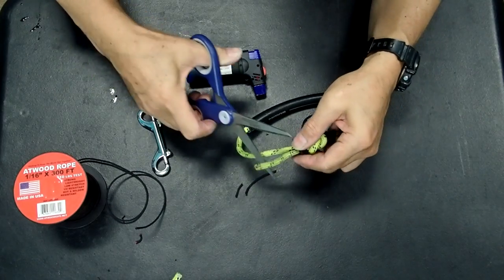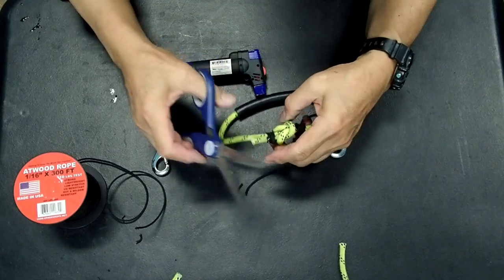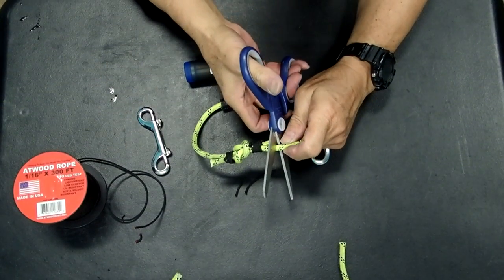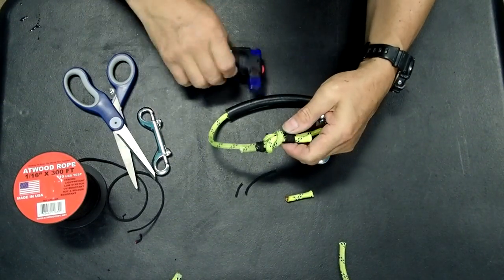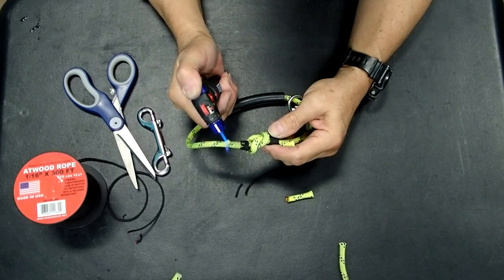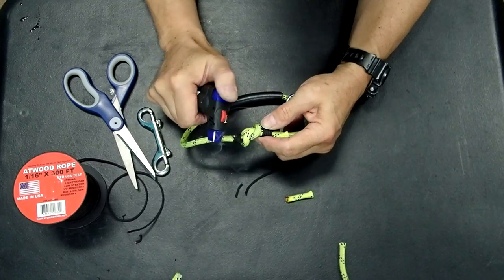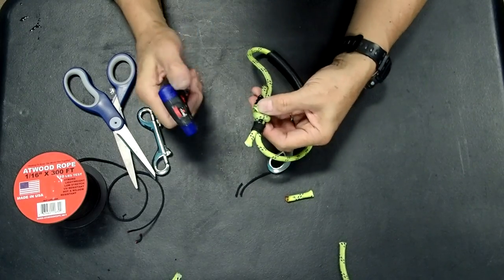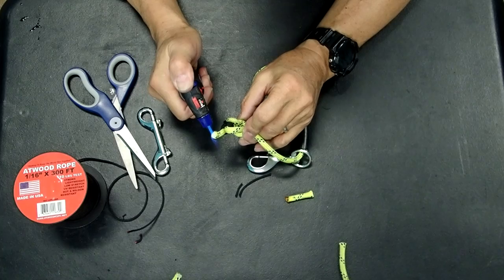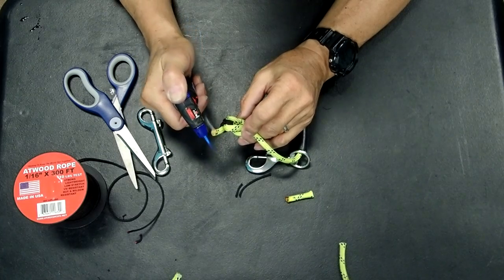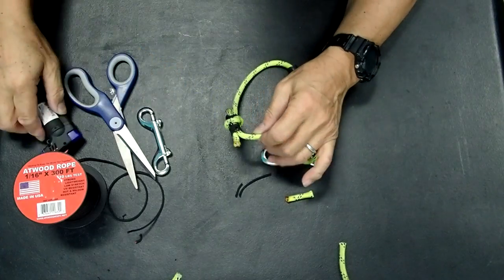Okay, then we're going to cut off the excess. Here. And here. And then we're going to burn this up. Make a big glob. Make sure that's not going to come undone. And another big glob here. Okay. Alright.